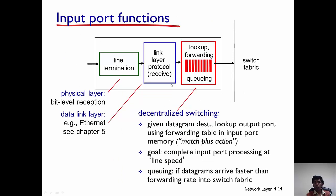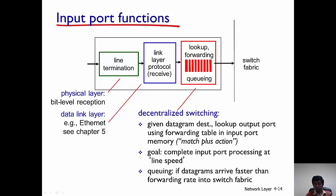The input port functions are the following. First, there is line termination where the actual bits are received, implemented at the physical layer. Then there is the link layer protocol — we'll talk about link layer protocols in chapter 5 — where they actually receive a link layer frame. Then there is lookup and forwarding to determine where a particular datagram has to be forwarded.